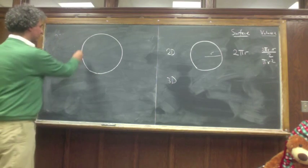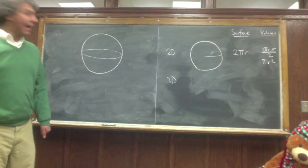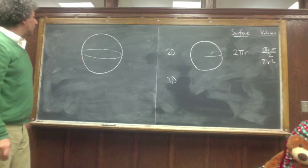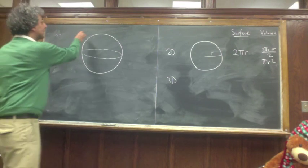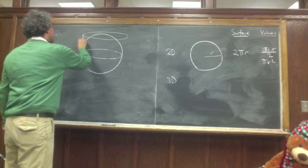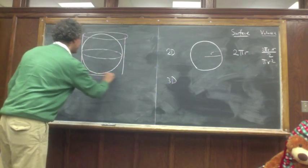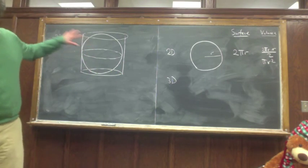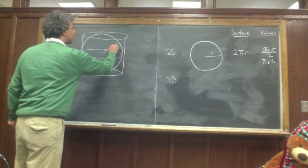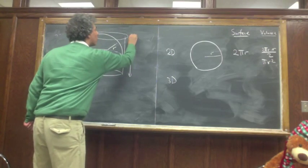So what Archimedes did, he noticed something super interesting. He said, let's consider a sphere and let's consider a cylinder. This cylinder will be the same size as the sphere such that the sphere will perfectly fit in it. So if the sphere has radius R, the cylinder will have a height of 2R.